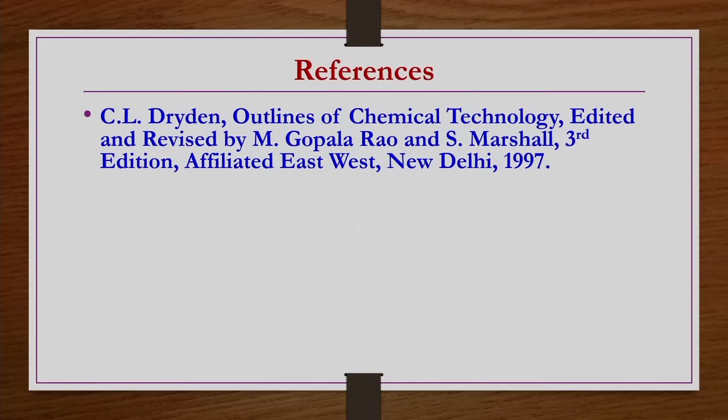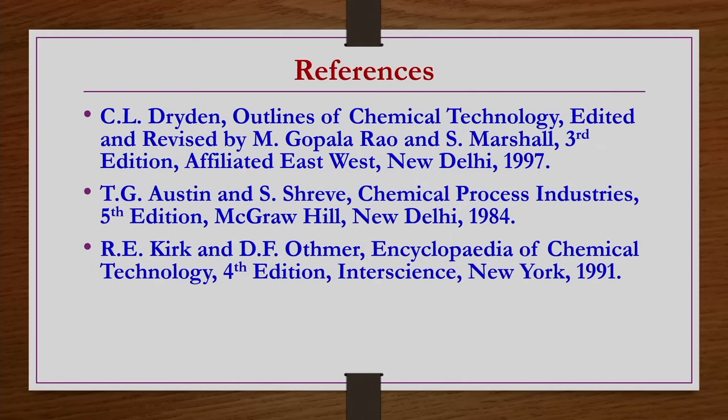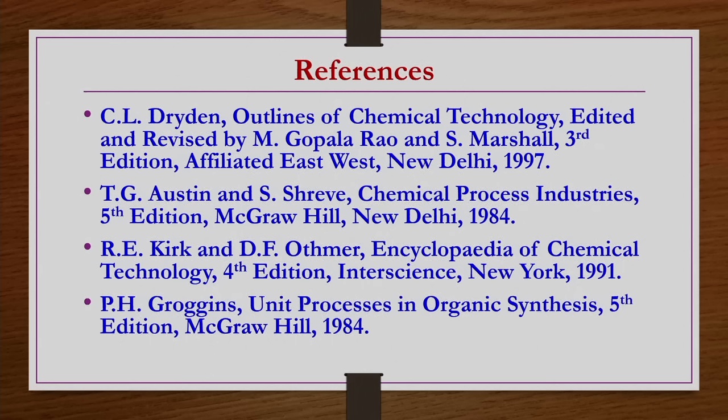Regarding evaluation, every week we will have an assignment, and all assignments would be computer-based. The final examination at the end of the semester would also be an online computer-based examination as per NPTEL requirements. For references, the majority of the contents will be prepared from the reference book C.L. Dryden's Outlines of Chemical Technology, revised by Gopal Rao and Marshall, third edition; and another book, Austin and Shreeve's Chemical Process Industries, fifth edition.